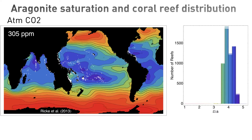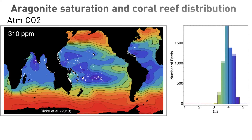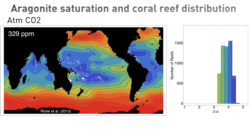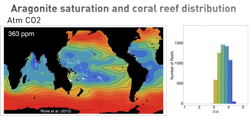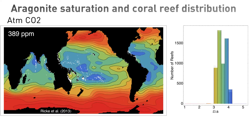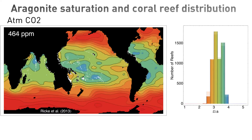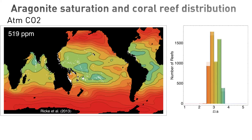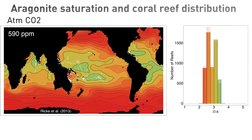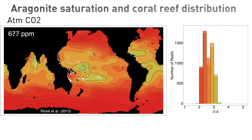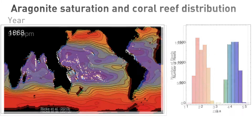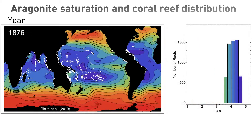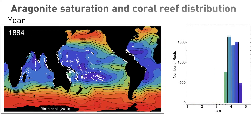The numbers up top show how the atmospheric concentration of carbon dioxide is increasing over time. So as atmospheric carbon dioxide rises, the ocean is becoming less saturated with aragonite. And the histograms at right show aragonite saturation state at each of the coral reefs marked in white on the map.